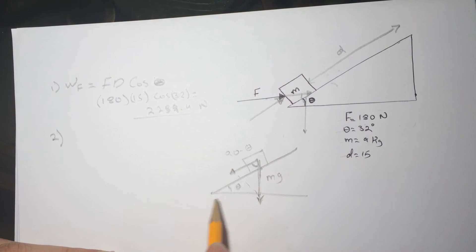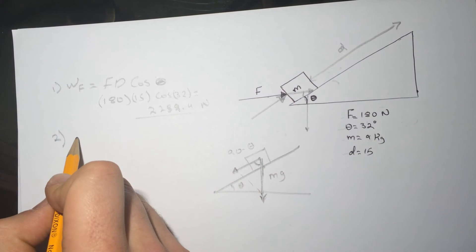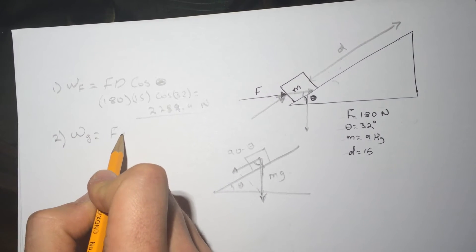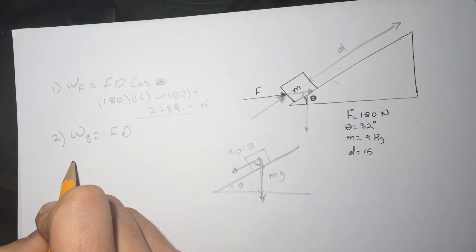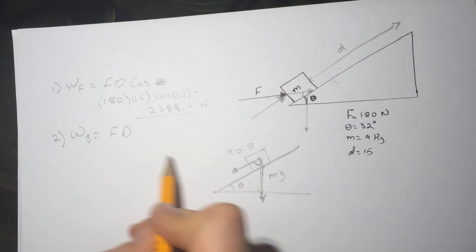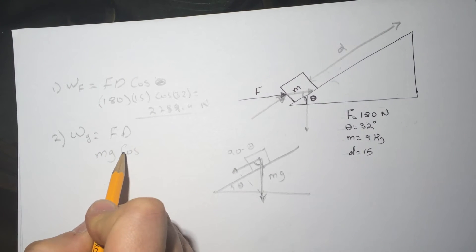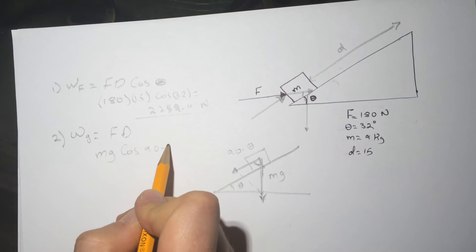All right, so the work by the gravity will be force times distance. Same. So the force of the gravity will be mg and then we'll do the cosine of 90 minus theta times d.